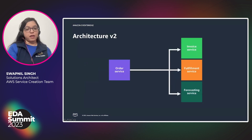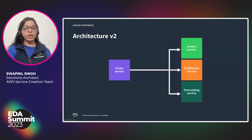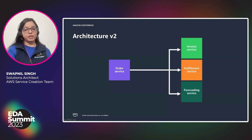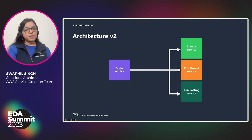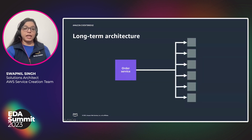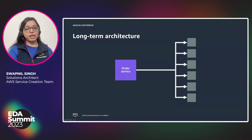But as architectures get more complex, you continue to add more services that integrate with order service. The complexity of order service increases because it has to handle the contract between itself and the rest of the services. It also has to manage the ordering of calls and take care of error handling for each of the services if they are failing. So this keeps adding complexity to the synchronous API architecture.